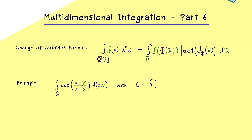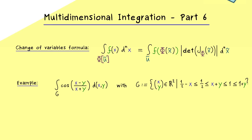The domain g is a subset in R2, so we consider x and y as a vector in R2. For this example we have a set of inequalities: 1/2 minus x is less than or equal to 1/2; 1/2 is less than or equal to x plus y; x plus y is less than or equal to 1; and 1 is less than or equal to 1 plus y. This is the whole definition of our region g in R2.